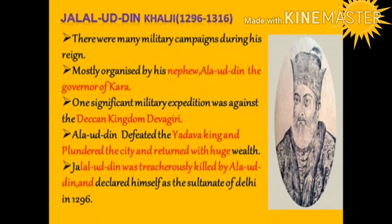During the reign of Jalaluddin Khalji, many military campaigns were organised and led by his nephew Alauddin, the governor of Kara. Alauddin, after defeating the Yadava king Ramachandra, plundered the city and returned with huge wealth. He then treacherously killed Jalaluddin after buying off prominent nobles with the wealth he had brought from the Deccan, and declared himself Sultan of Delhi in 1296.